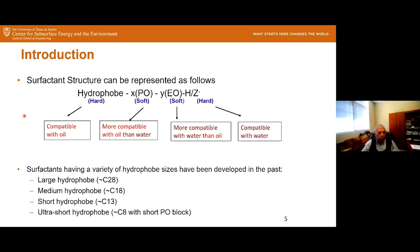In the past, we have shown surfactants having a variety of hydrophobe sizes. We started with large hydrophobe anywhere from C32 to C28, then went down to medium hydrophobe around 18 carbons, then down to short hydrophobe around 13 carbons — the so-called tridecyl alcohol derived surfactants. And we did a very brief foray into ultra-short hydrophobe with C8 and with a short PO block.